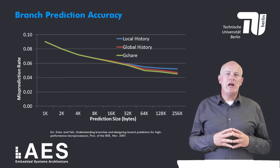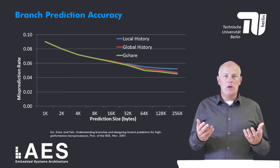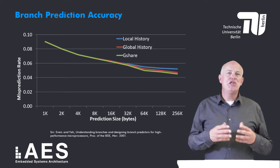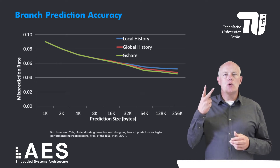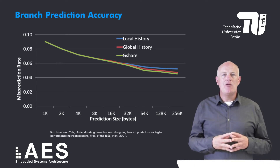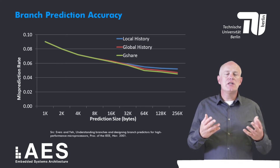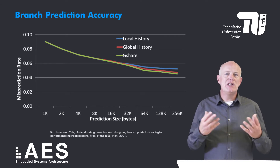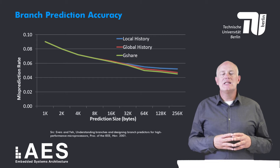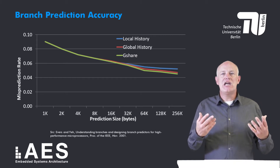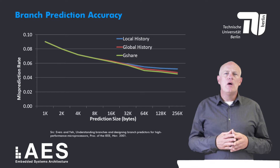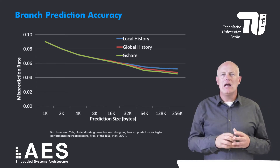Three different branch predictors are compared: the local history branch predictor, the global history branch predictor, and the G-share predictor. Two conclusions can be drawn. First, prediction accuracy increases with the size of the predictors, which is not surprising. Second, the G-share predictor is more accurate than the other two, but only for large predictor sizes and even then only marginally.